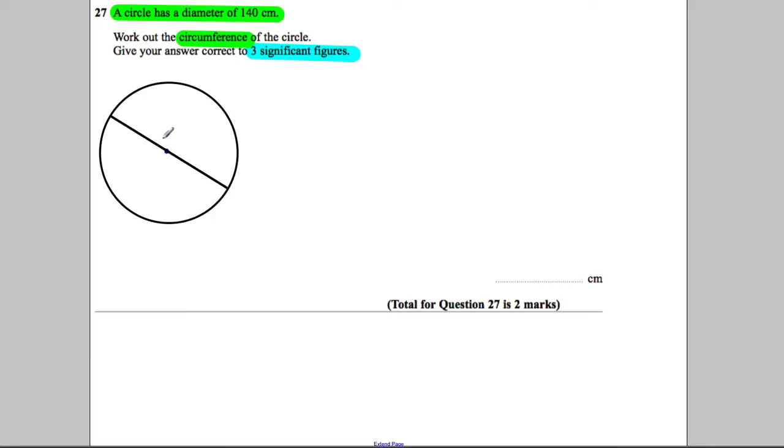We're supposed to know that the circumference of the circle is π multiplied by the diameter, so 140 centimeters.